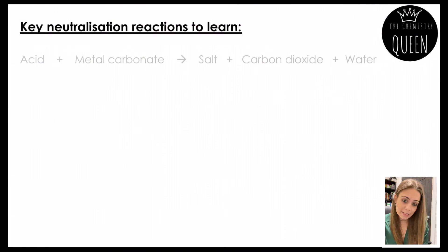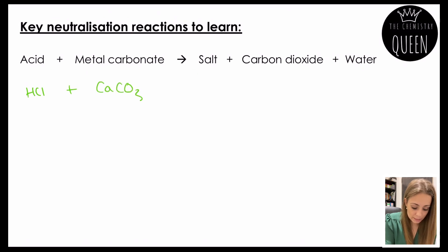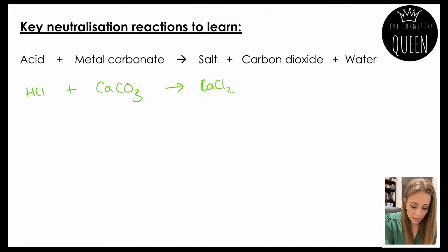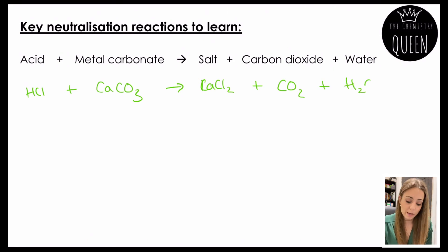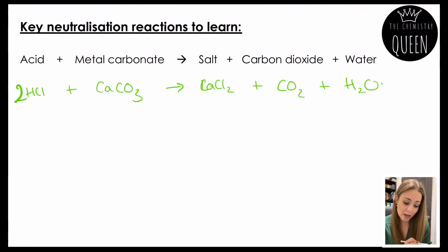Another neutralisation reaction: acid plus a metal carbonate. For example, hydrochloric acid plus calcium carbonate gives calcium chloride plus carbon dioxide plus water. We need to balance it, and again we can see that the hydrogen ion swaps with the metal ion to form the salt calcium chloride.